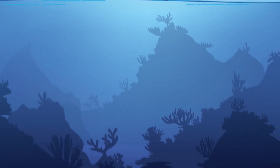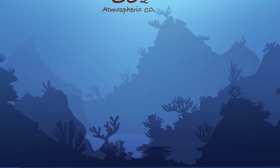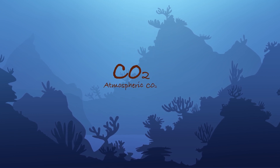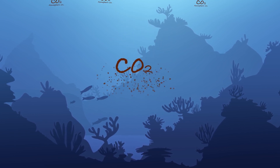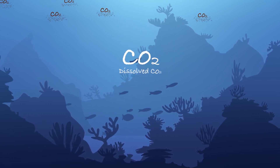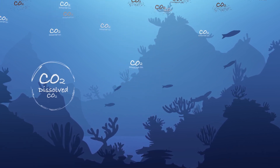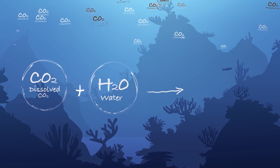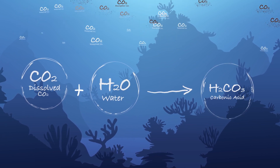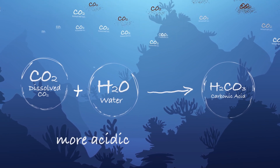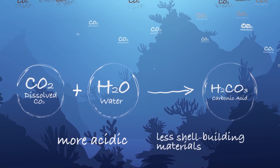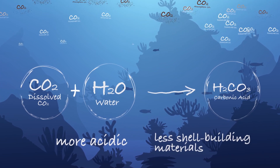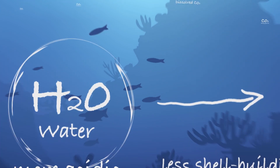About a quarter of these emissions enter the oceans, which dissolve and react with water. This chemical reaction creates carbonic acid, which lowers the pH of the ocean, making it more acidic and reducing the availability of shell-building materials.